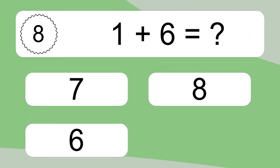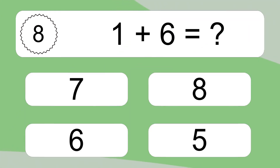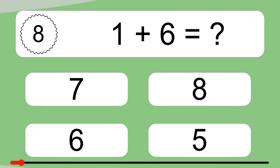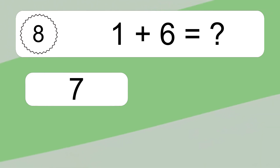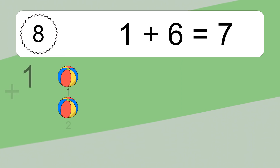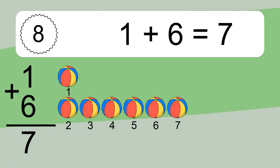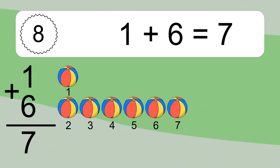1 plus 6 equals what? 1 plus 6 equals 7. Let's count it: 1, 2, 3, 4, 5, 6, 7.